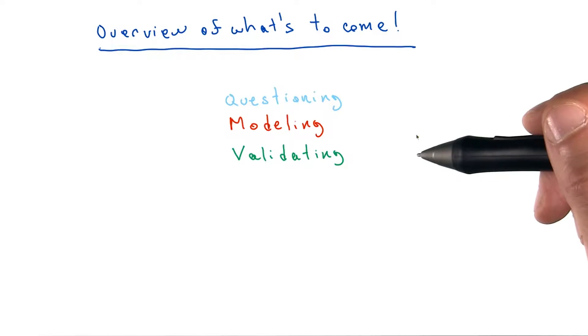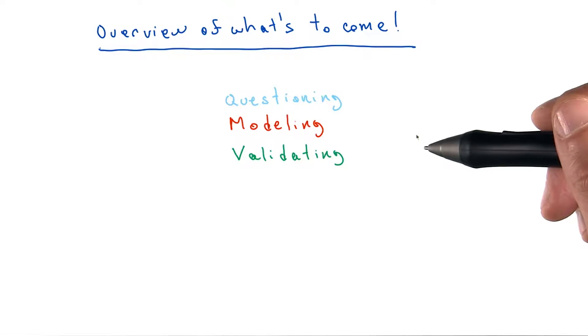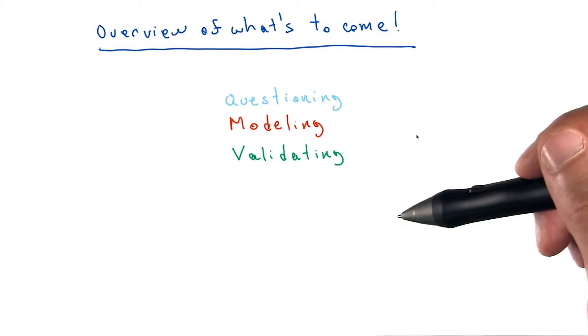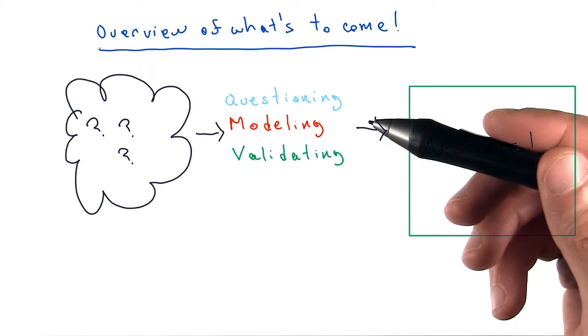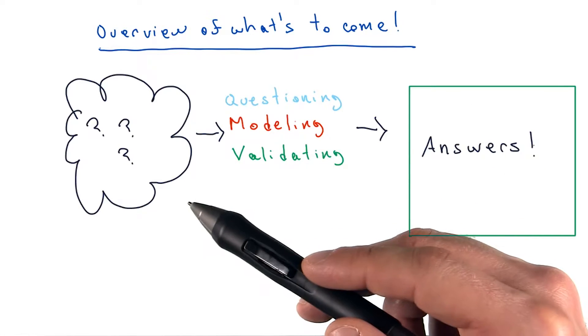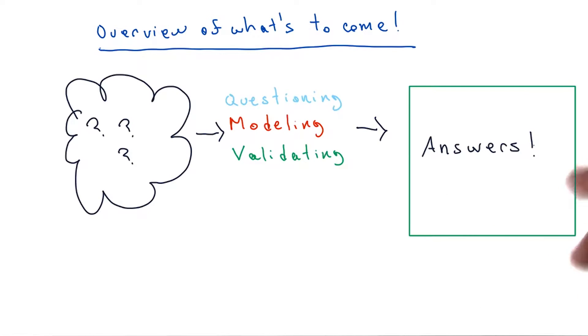Before we get started with the analysis in this lesson, I want to talk about the general process of questioning, modeling, and validating. The purpose of the iterative QMV process of analysis is to take a vague question and turn it into something that is answerable.